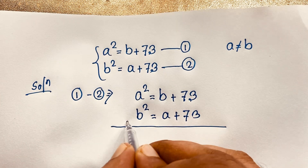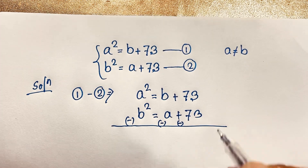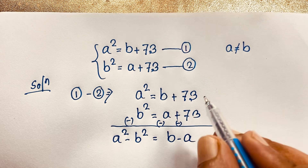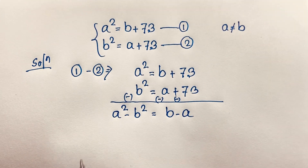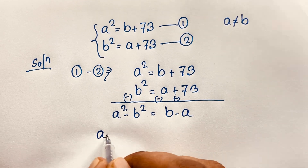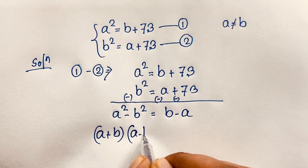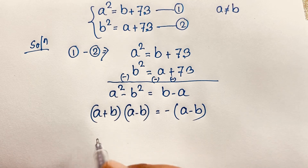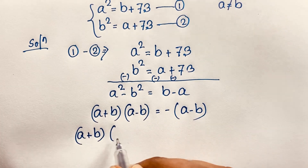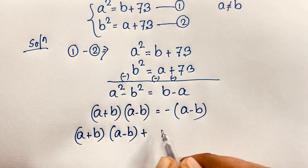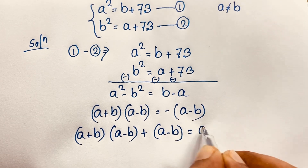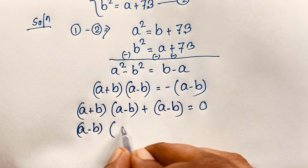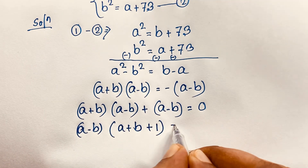I subtract the first equation from the second equation, changing signs: minus b squared, minus a, minus 73. This gives a squared minus b squared equals b minus a, and 73 minus 73 equals 0. Now a squared minus b squared factors as (a+b)(a−b), and taking negative sign common from (b−a) gives (a−b). Moving it to the other side: (a+b)(a−b) plus (a−b) equals 0. So (a−b) is common, giving (a−b)(a+b+1) equals 0.